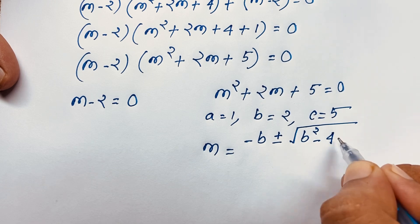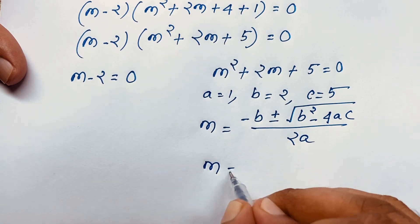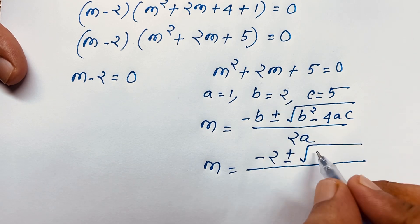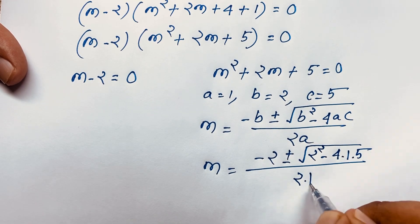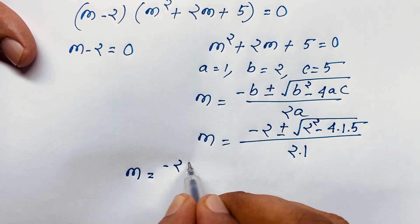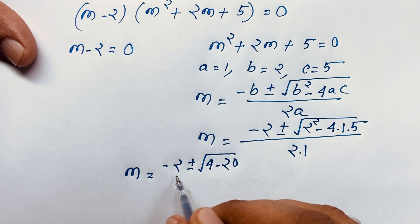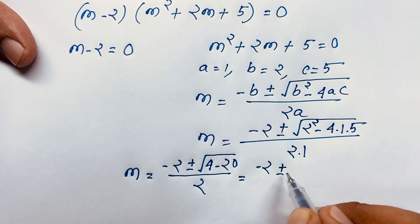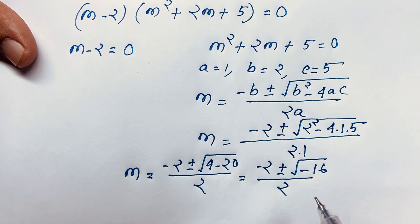Substituting: m equals negative 2, plus or minus square root of 2² minus 4 times 1 times 5, over 2 times 1. This gives m equals negative 2, plus or minus square root of 4 minus 20, over 2. That is negative 2 plus or minus square root of negative 16, over 2.